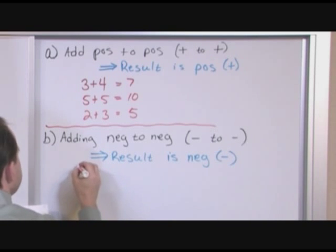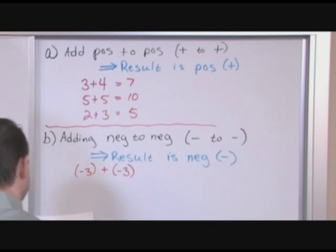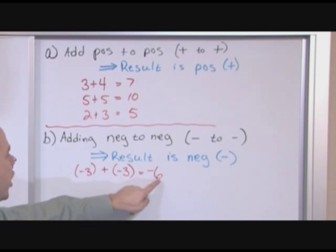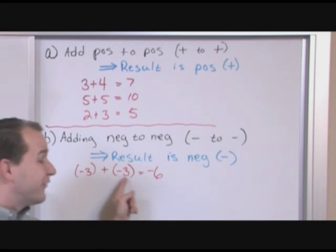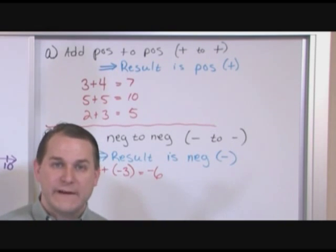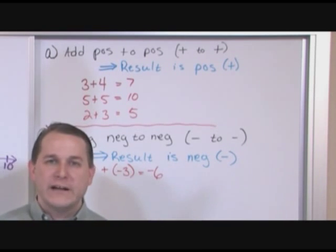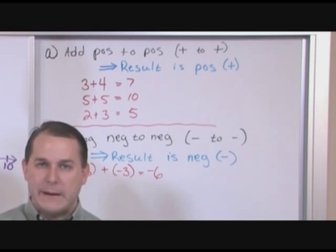So let's do some quick examples. Negative three plus negative three equals negative six. If I borrowed three band-aids and then borrowed three more, at the end of the day I owe six band-aids total. What you're doing when adding negative numbers together is adding the absolute values — three plus three equals six — and that's why we had to learn absolute value. But the sign out front is negative because negative plus negative is negative.